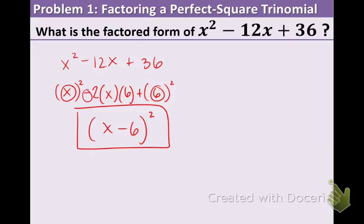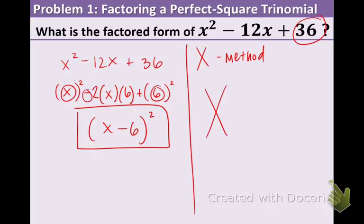If you didn't follow the shortcut method, I'll show you the X-method. Draw an X, put the last term (36) on top and the middle term (-12) on the bottom. What numbers multiply to get positive 36 but add to get negative 12? They both must be negative. Factors of 36 are: 1 and 36, 2 and 18, 3 and 12, 4 and 9, 6 and 6.